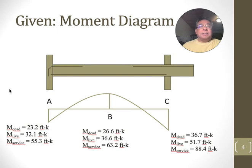It's indeterminate, and so I've given you the moment diagram. I have the dead moment and live moment at left, middle, and right. And the service moment is just a sum of dead plus live, which you could easily add up. But I've just included it here. For example, at A, 23.2 plus 32.1 equals 55.3.